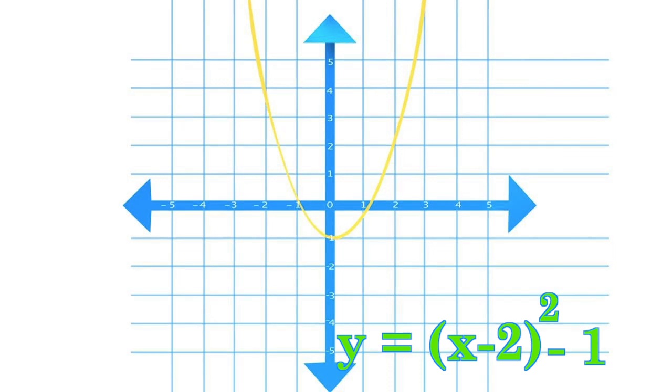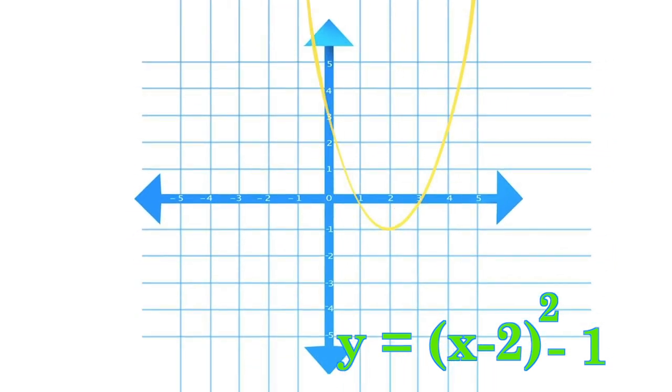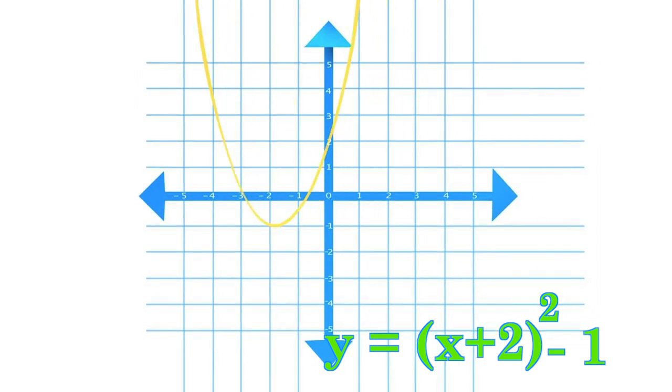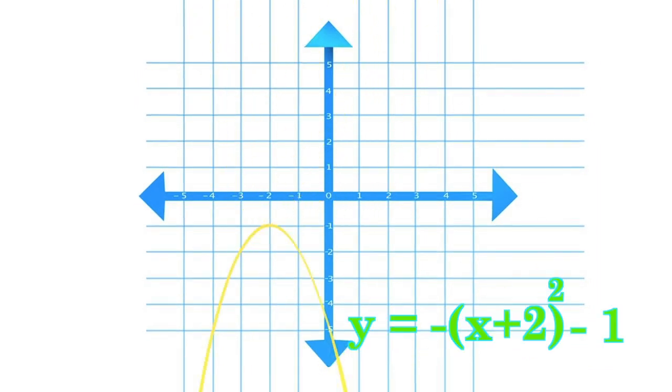If we subtract from the squared term in the formula, we shift the vertex of the parabola to the right. If we add to the squared term, we shift the parabola to the left. We can also flip the parabola upside-down by making x squared negative.